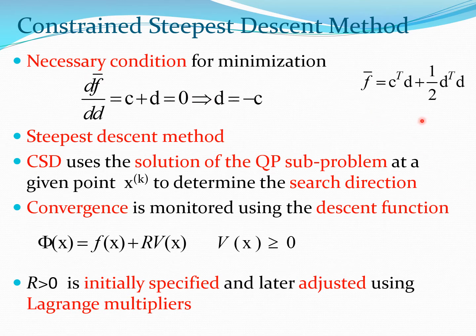If we take this function f bar and we want to find the search direction which would minimize it, we can simply differentiate f bar with respect to D, so you get C plus D equals 0, which gives you D equals minus C, which is nothing but the steepest descent method. Therefore, if no constraints are present in the problem, the steepest descent method is the same as the constrained steepest descent method.